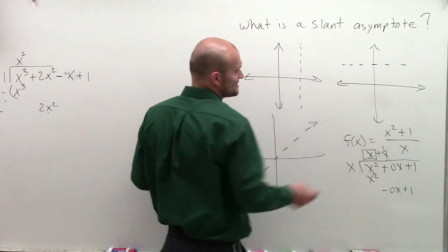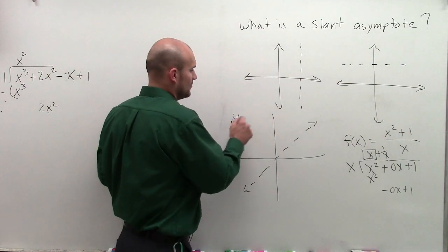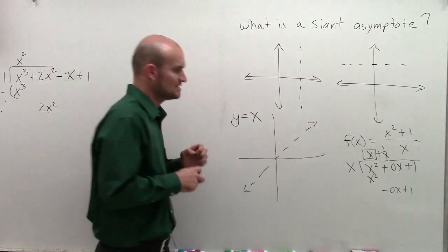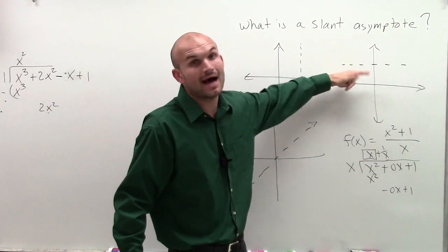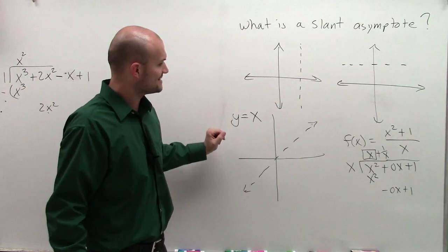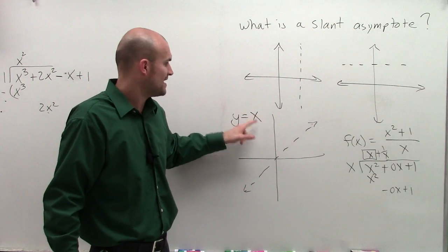So when I look at this, x is going to be my slant asymptote. Well, what do I mean x will be my slant asymptote? What I mean is y equals x is your slant asymptote. Remember, our horizontal asymptote was y equals a value. Well, when we have a slant asymptote, it's going to be the same thing - y is going to equal that value.